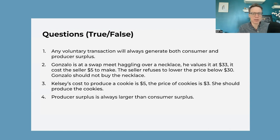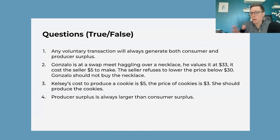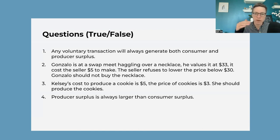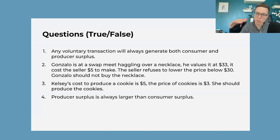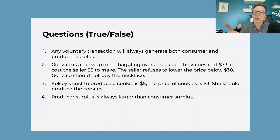Another scenario: you're haggling over something, the producer won't budge and you're getting really mad. Maybe you walk away just because you're mad and you let your anger overrun you. But if you value it at more than the price, you should still buy it — as long as your value is higher than the price. On the producer side, something similar: as long as what is being offered is higher than your cost, you should take it. And if what's being offered is less than your cost, you shouldn't produce.